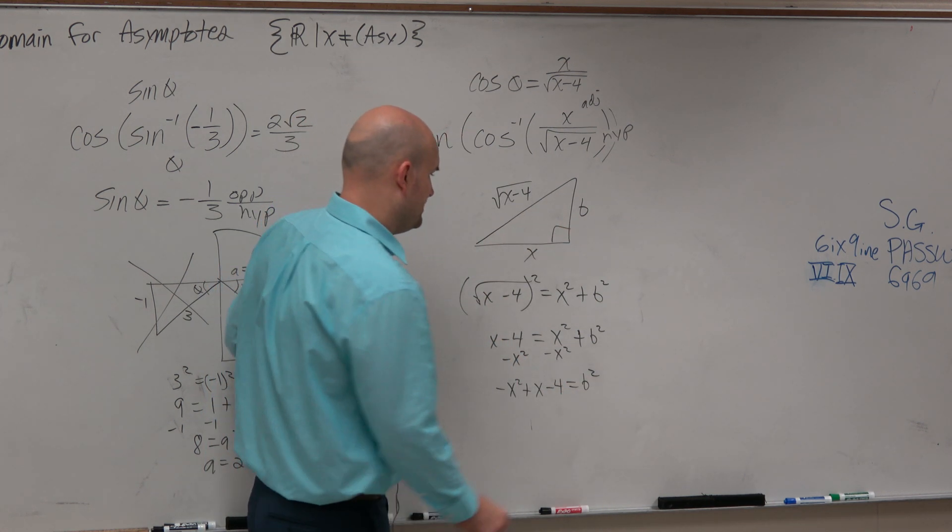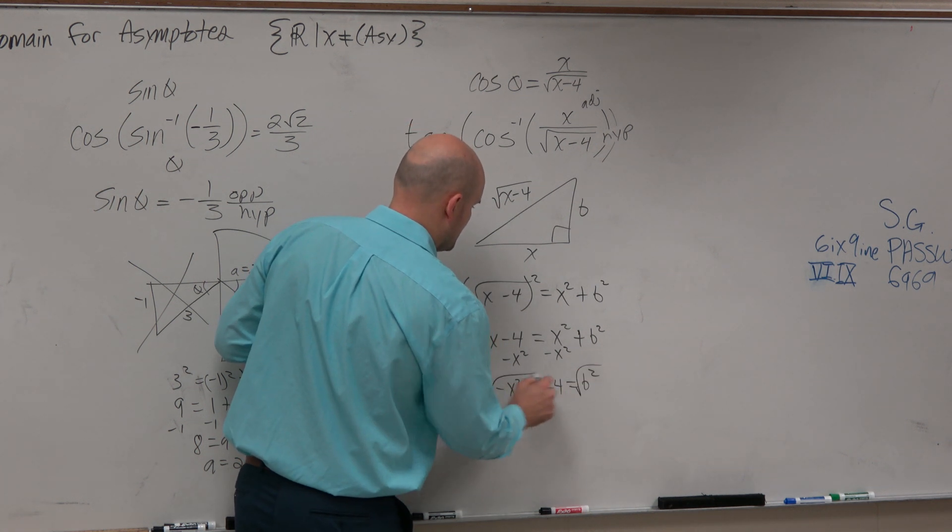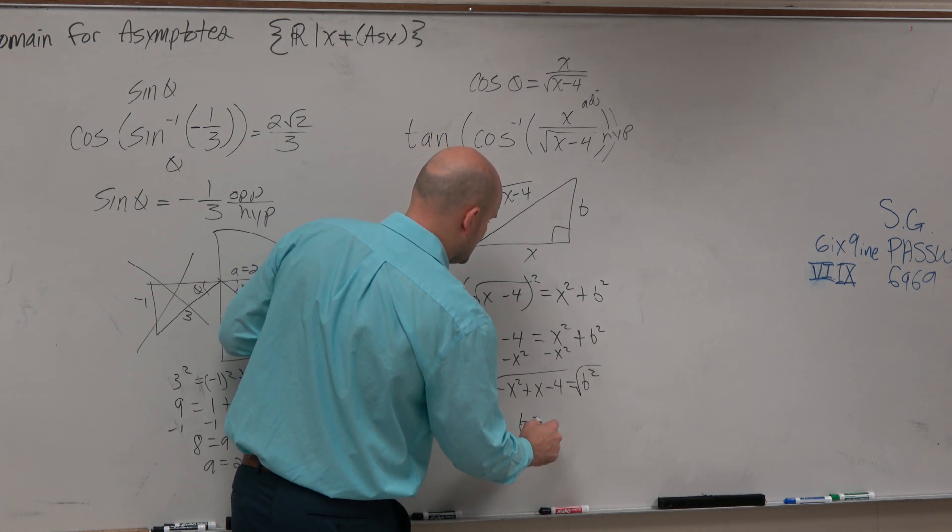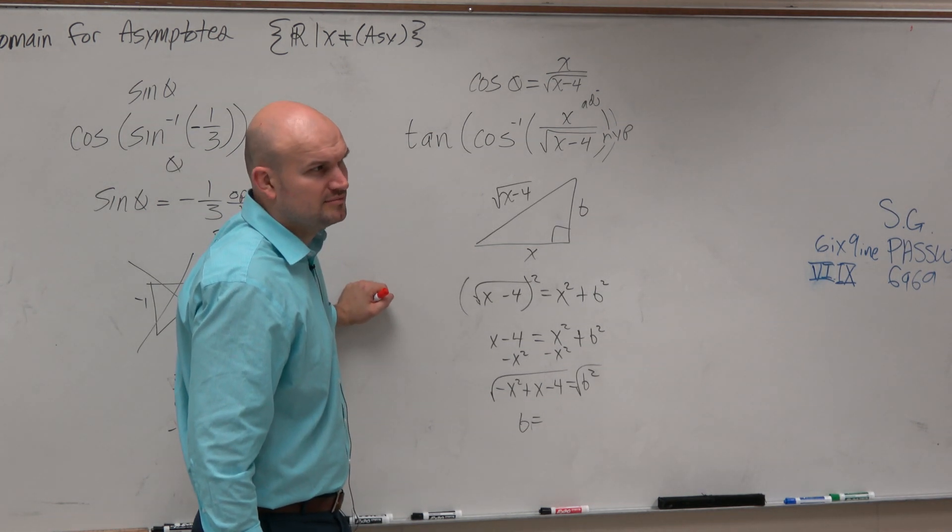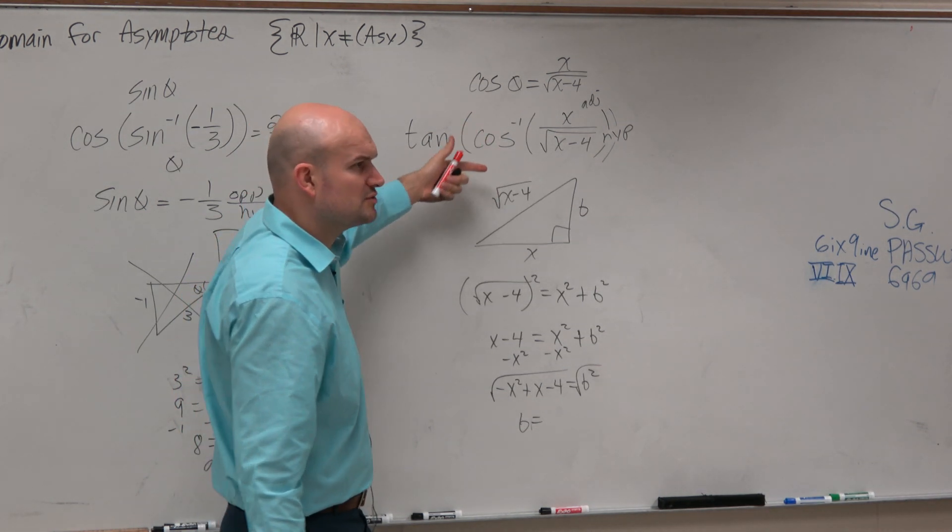But again, to solve for b, we're going to take the square root of both sides. Therefore, b is equal to, should I use plus or minus, or just keep the plus? Just plus, right? Because we know it's in the first quadrant.